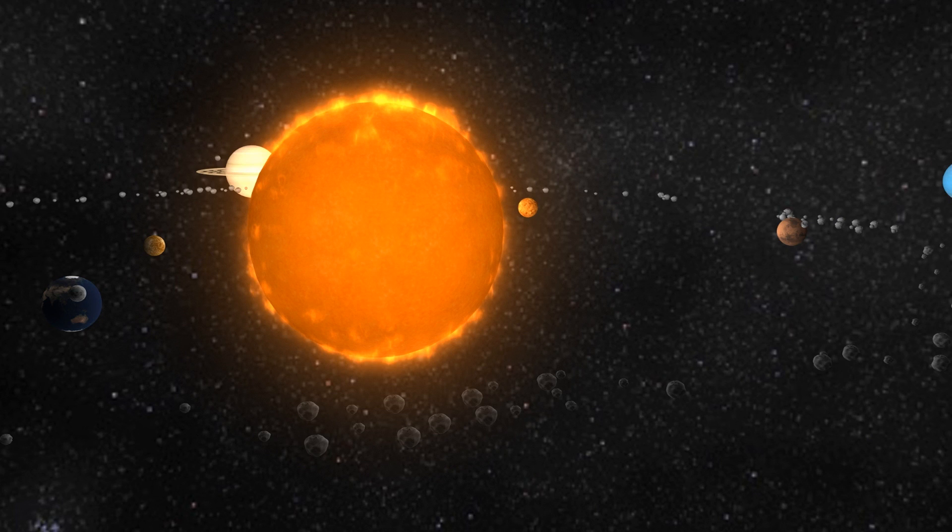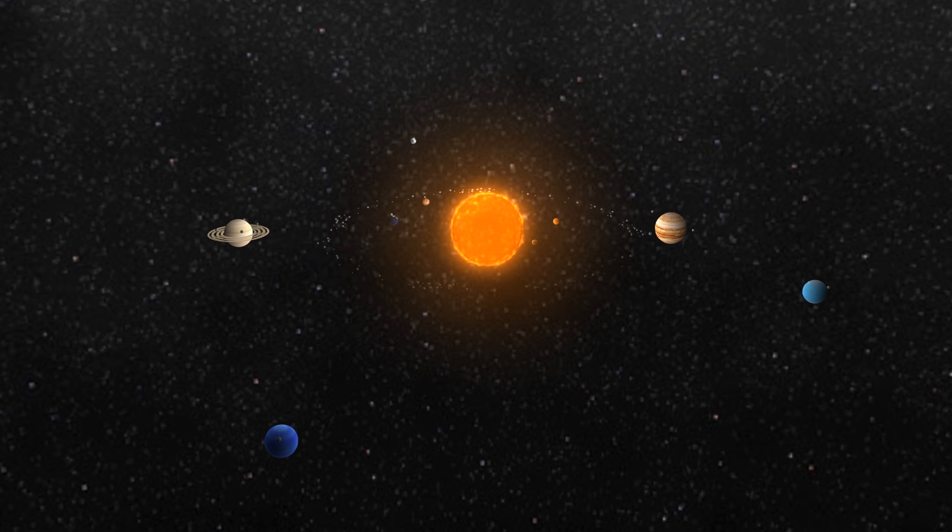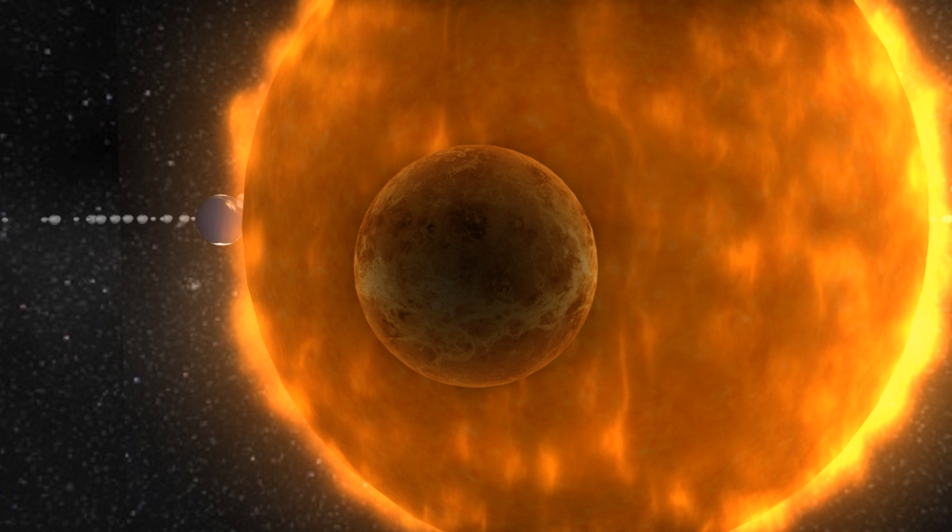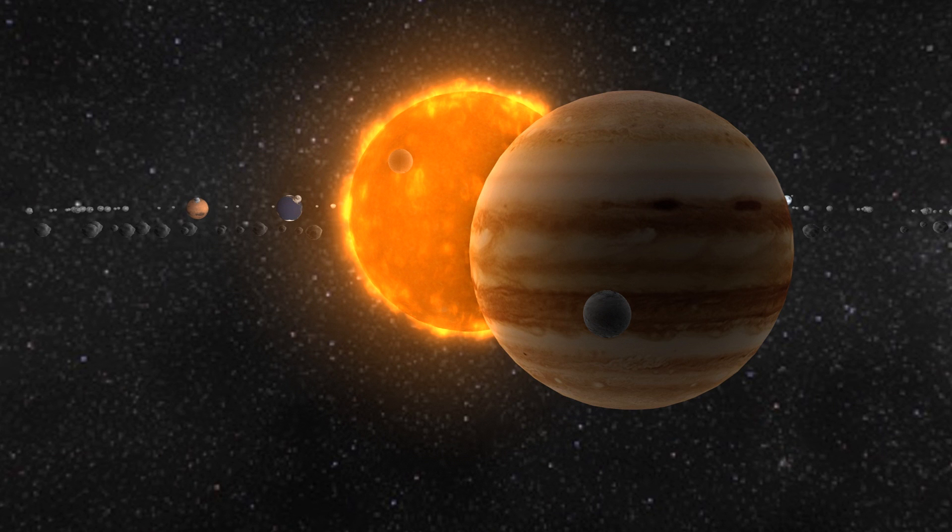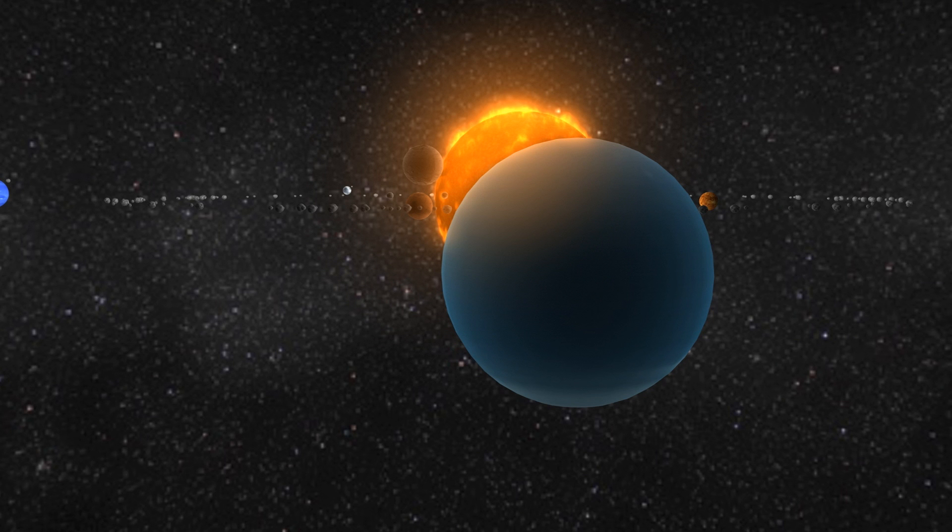The solar system, the home of our sun and our eight planets: Mercury, Venus, Earth, Mars, Jupiter, Saturn, Uranus, and Neptune.